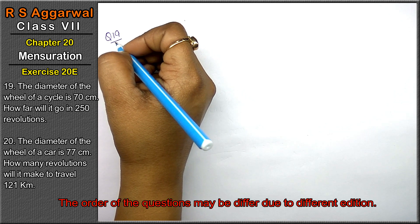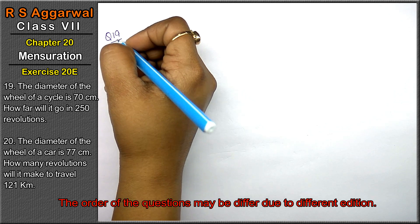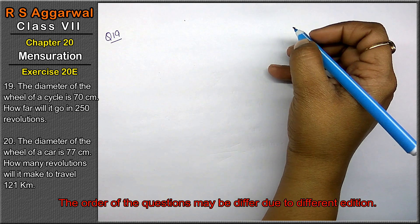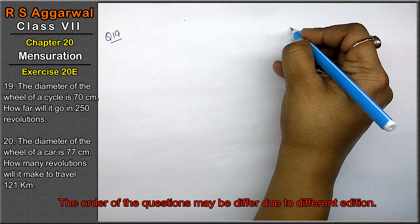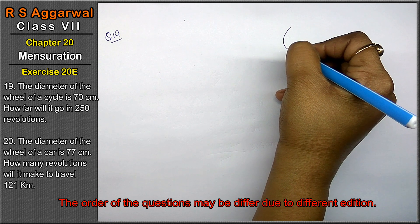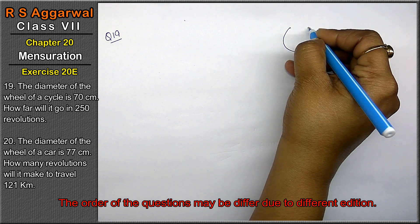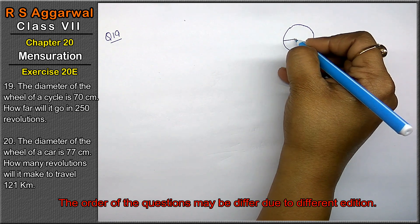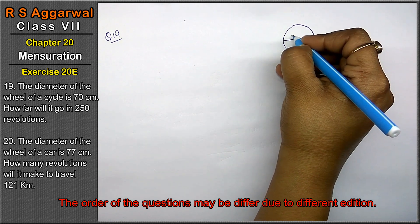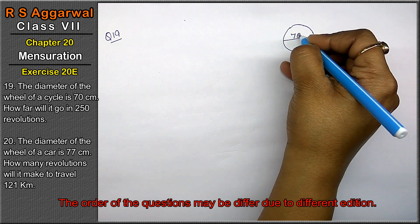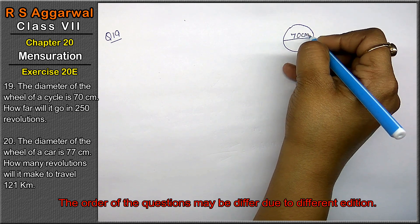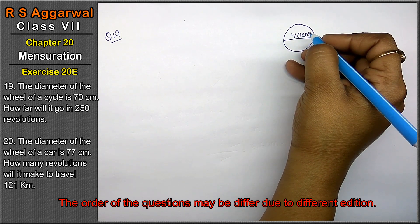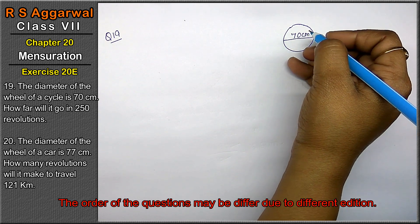Question number 19 is: the diameter of the wheel of a cycle. Friends, the wheel ka diameter de rakha hai 70 cm. How far will it go in 250 revolutions?